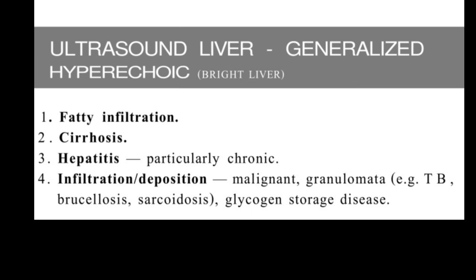Generalized hyperechoic liver differentials include fatty infiltration, which is the commonest cause and should not be confused with other differentials. The second is cirrhosis, which is a degenerative process. One should be careful to differentiate whether the generalized hyperechoic liver is due to fatty infiltration or cirrhosis. In cirrhosis, other signs will also be present, such as splenomegaly, thickened gallbladder wall, or irregular margins of the liver. Make sure to distinguish fatty liver from cirrhosis.